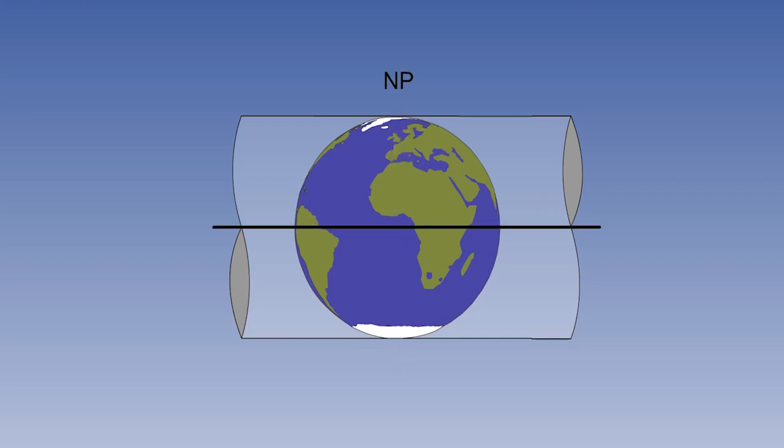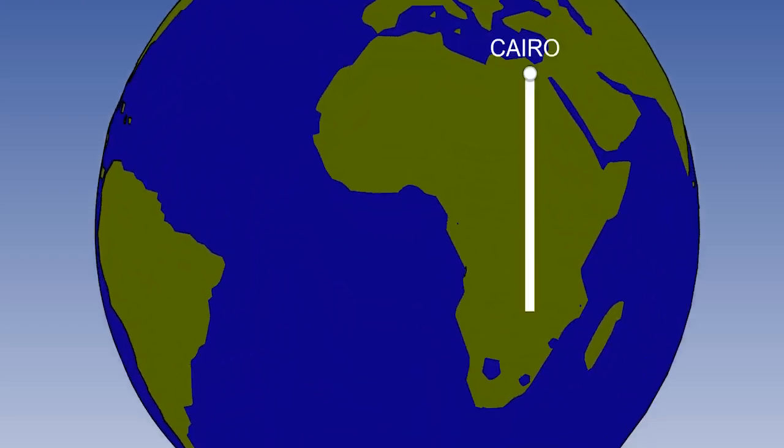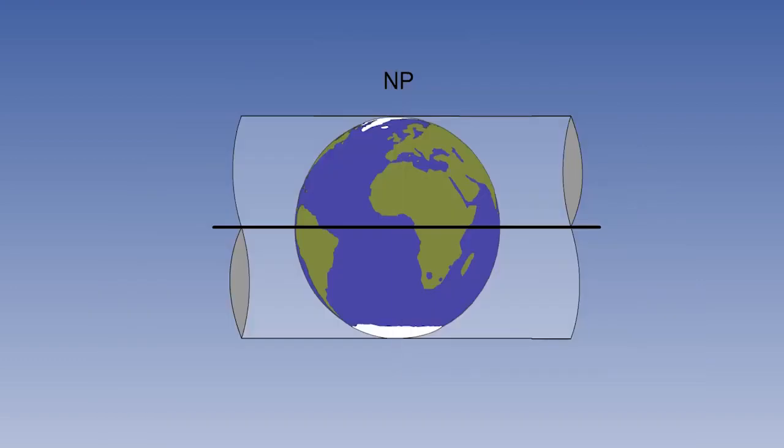We can choose whatever longitude we want for the meridian of tangency. For instance, Cairo to Johannesburg, or Istanbul to St Petersburg. We now have a projection which is completely correct along the whole length of the meridian of tangency, and is within 1% of the correct scale, up to 480 miles either side of it.